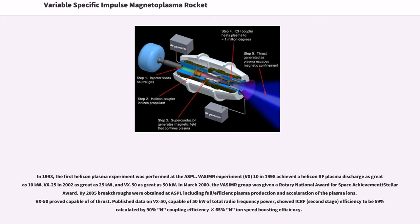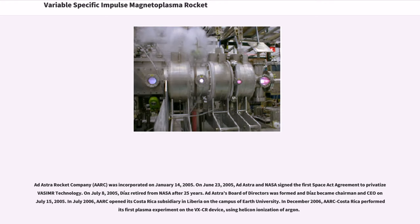In March 2000, the VASIMR group was given a Rotary National Award for Space Achievement. By 2005, breakthroughs were obtained at ASPL including full efficient plasma production and acceleration of the plasma ions. VX-50 proved capable of thrust. Published data on VX-50, capable of 50 kW of total radio frequency power, showed ICRF efficiency to be 59%, calculated by 90% coupling efficiency times 65% ion speed boosting efficiency. The Ad Astra Rocket Company was incorporated on January 14, 2005.